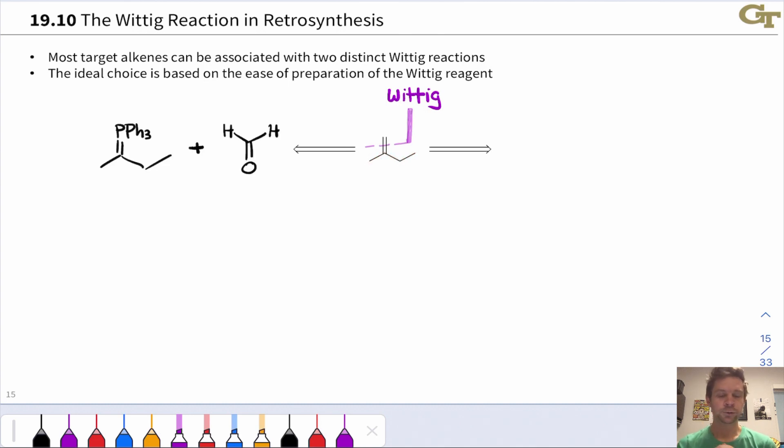Let's consider using formaldehyde and this phosphonium ylid first. This looks appealing because formaldehyde is cheap, it's small, it's relatively easy to handle.